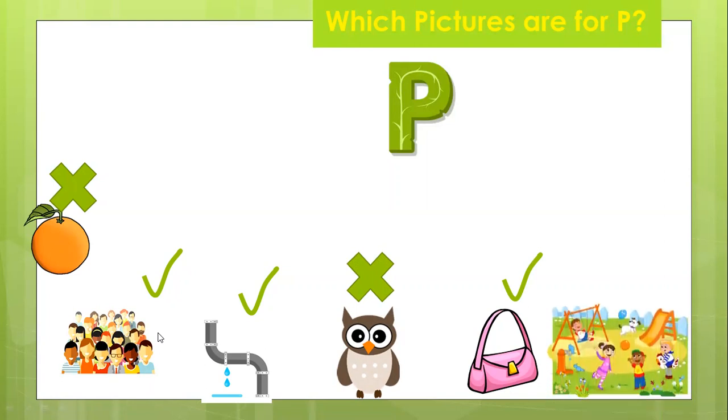Is P for playground or play? Yes. P is for playground or play. The kids are playing at the playground. So P is for play or P is for playground. Correct?